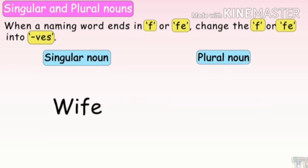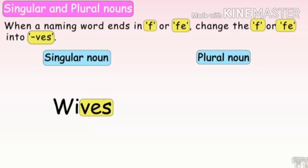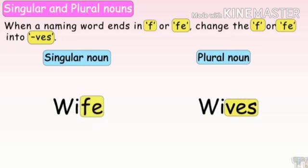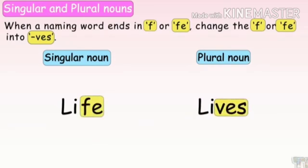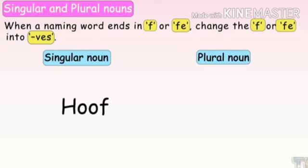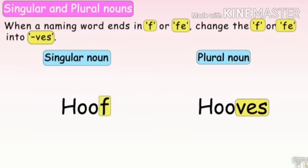Wife — FE is there. Remove FE and write VES — wives. Life — also has FE. Remove FE and write VES — lives. Hoof — H-O-O-F. Remove F and write VES — hooves. Calf — C-A-L-F. Remove F — calves.